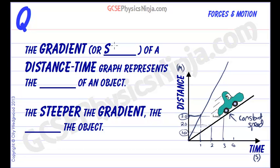The gradient or slope of a distance-time graph represents the speed of an object. And the steeper the gradient, the faster the object is.